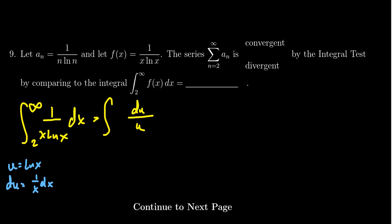I also want to change the bounds. When x is 2, you're going to get the natural log of 2. When x goes towards infinity, you're going to get u is also approaching infinity.